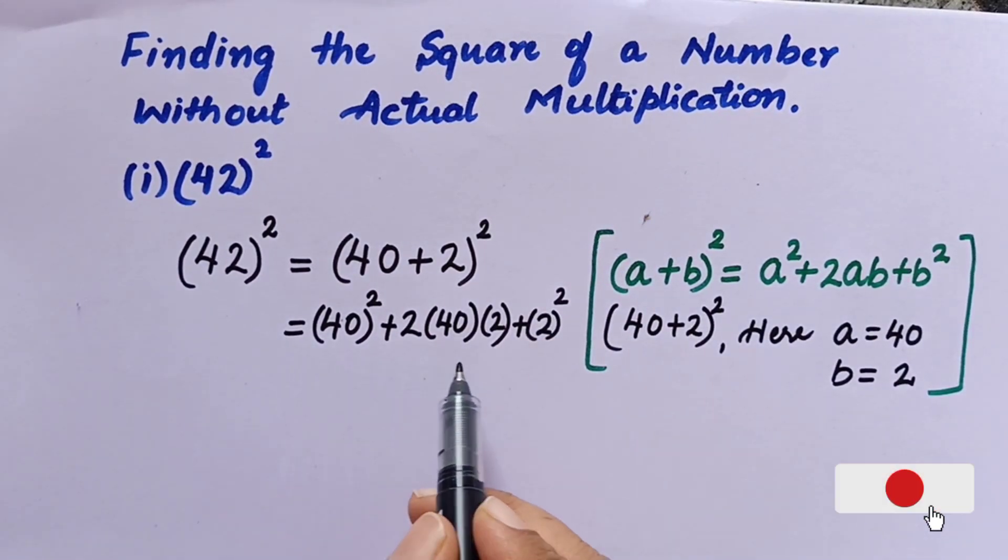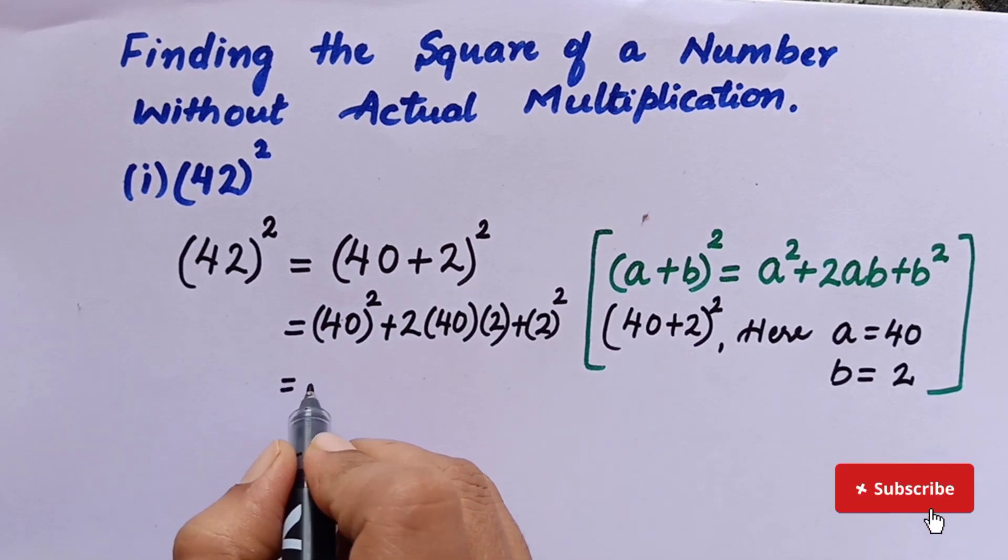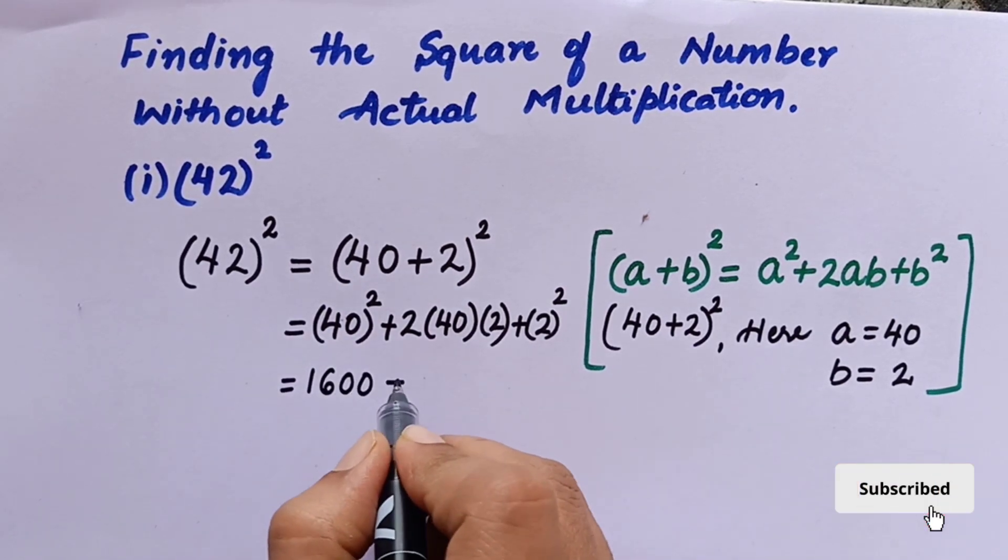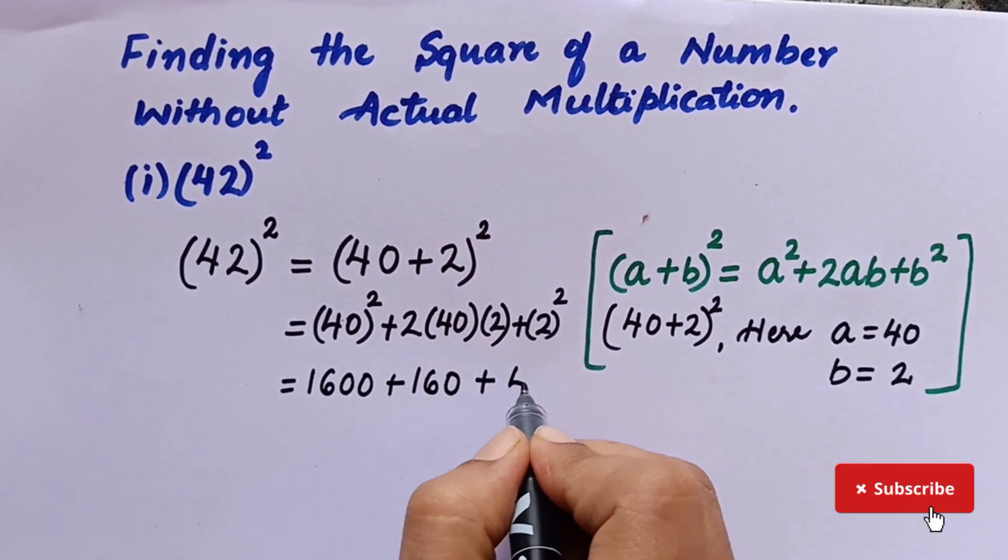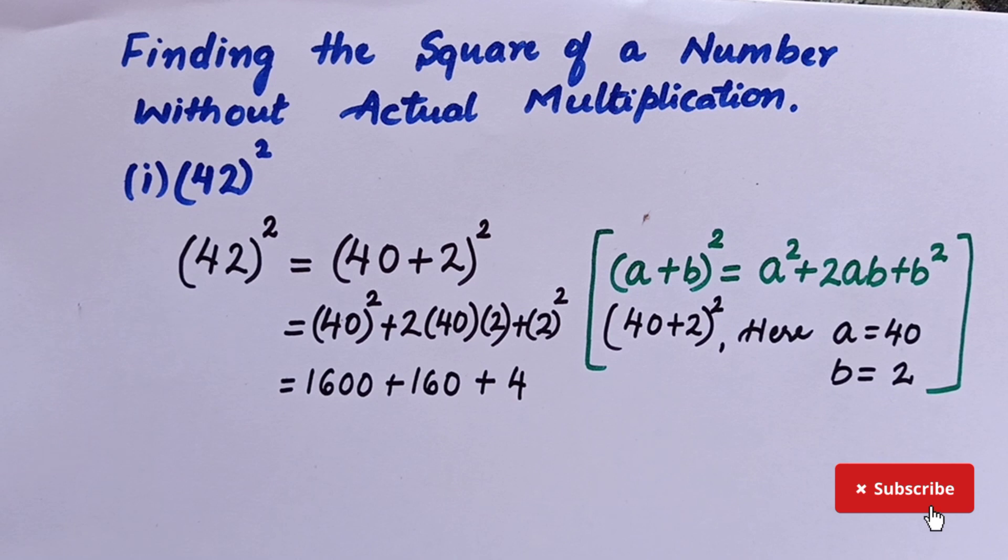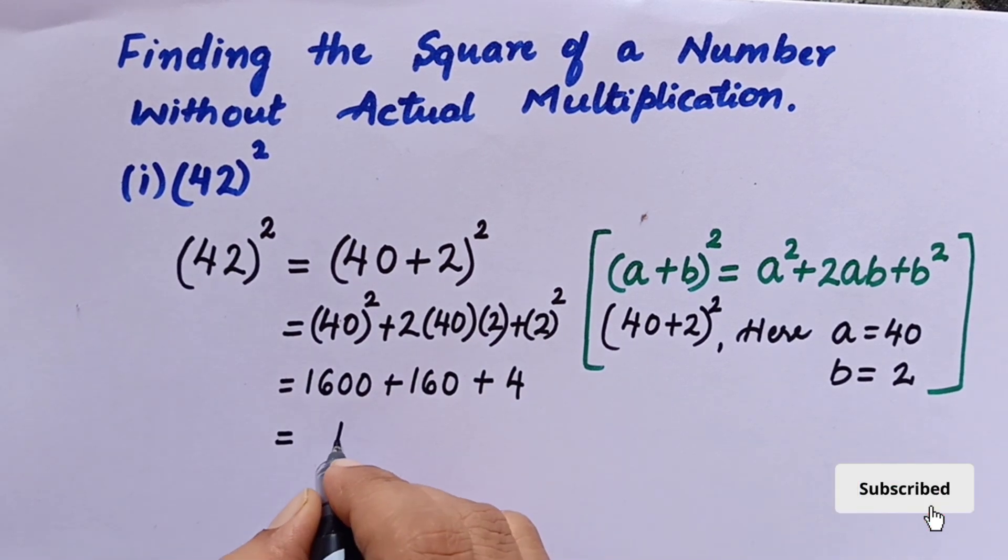So therefore, what is 40²? It is 1600 plus 2 into 40 into 2, which is 160, plus 2², which is 4. Now adding all these numbers we get the total.